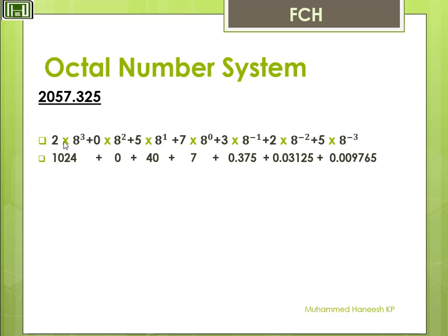Calculate it. We get 2 into 8 raised to 3, which is 1024. Plus 0 into 8 squared, which is 0 into 64, that is 0. Plus 5 into 8, that is 40. Plus 7 into 8 raised to 0, which is 7 into 1, that is 7. Then 3 into 8 raised to minus 1, that is 0.375. Plus 2 into 8 raised to minus 2, that is 0.03125. Plus 5 into 8 raised to minus 3, that is 0.009765. Add all these values and you will get 1071.416015 to the base 10.